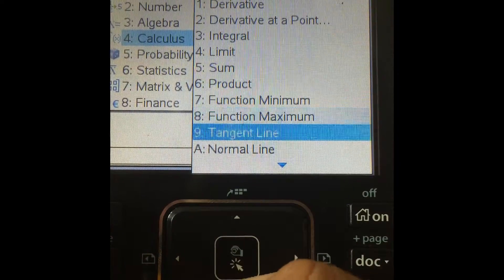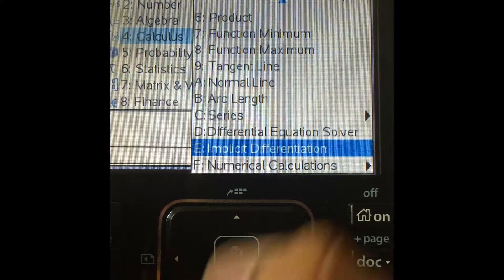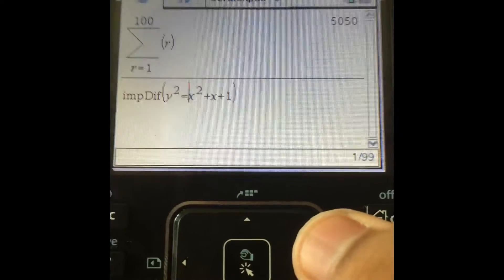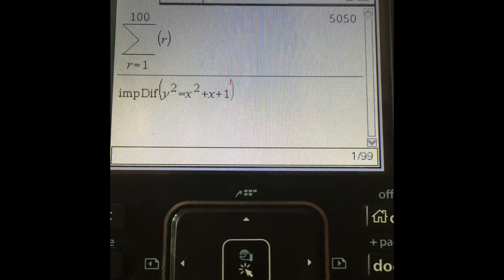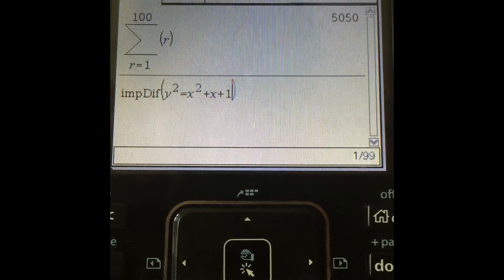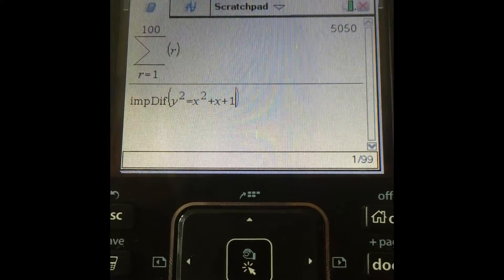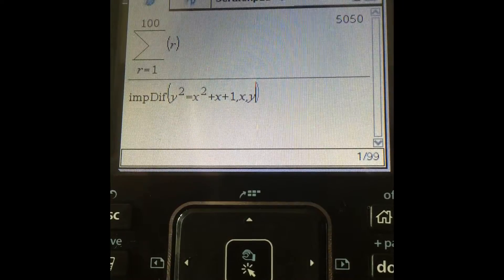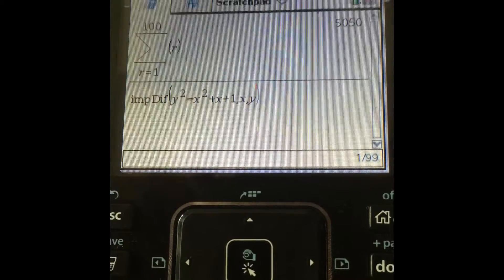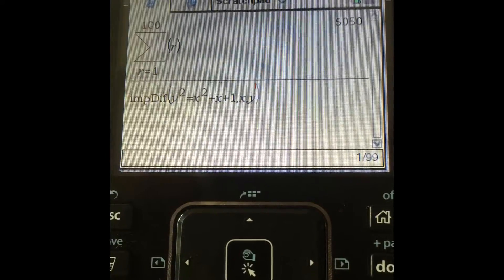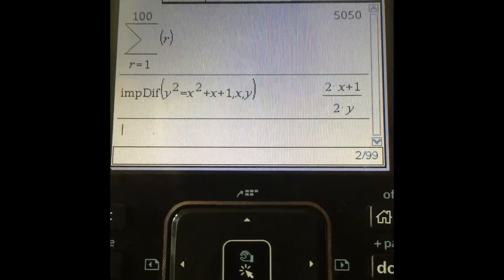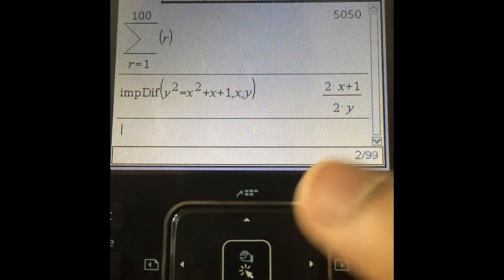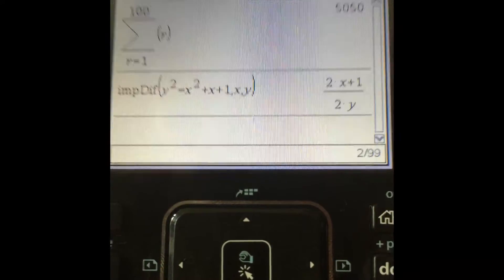Another option is the implicit differentiation option. So it's all the way down here. So let's say equation is y squared equals to x squared plus x plus 1. And to make this work, what you need to do is actually give it the variable. So it needs to know what is x and what is y. So just comma x comma y. So x is what you're differentiating with respect to and y is the variable that depends on x. And when I press enter, it gives me dy/dx of this function in terms of x and y, of course.